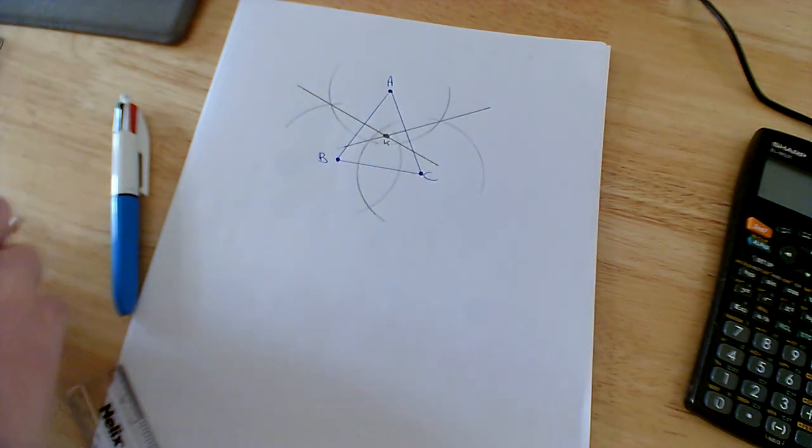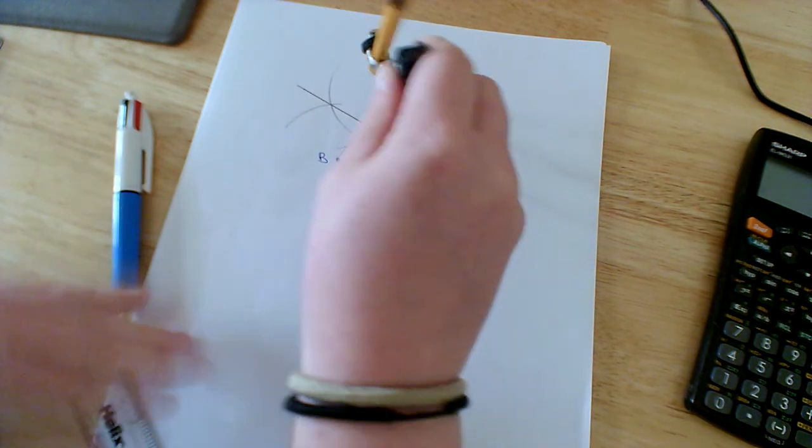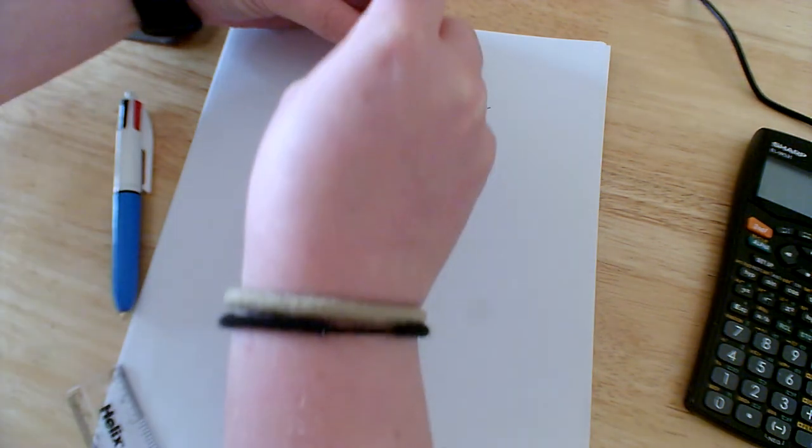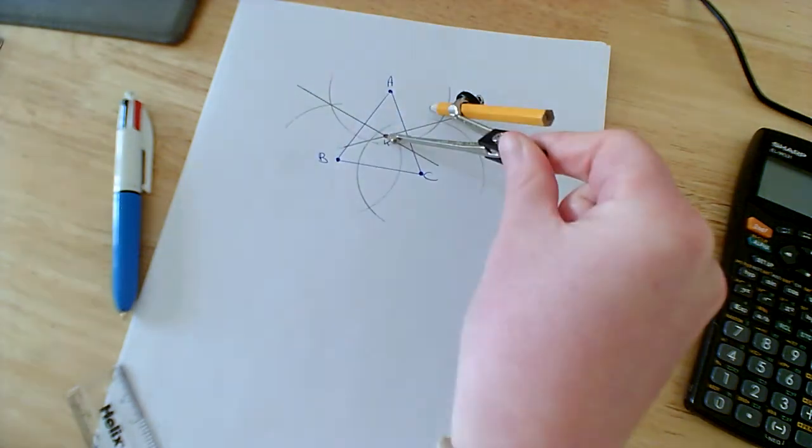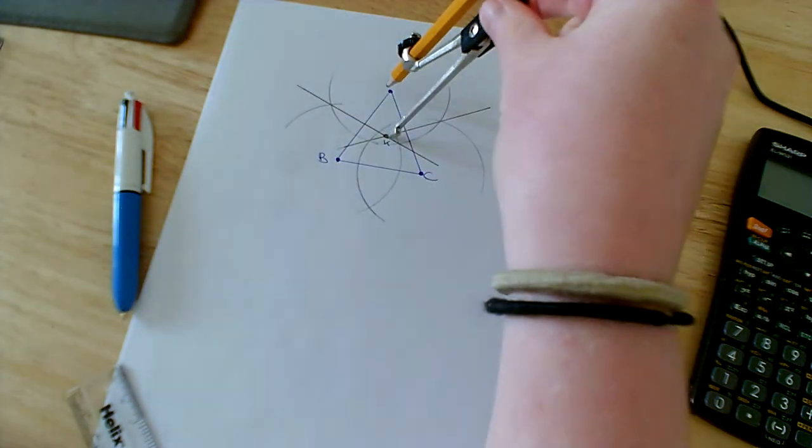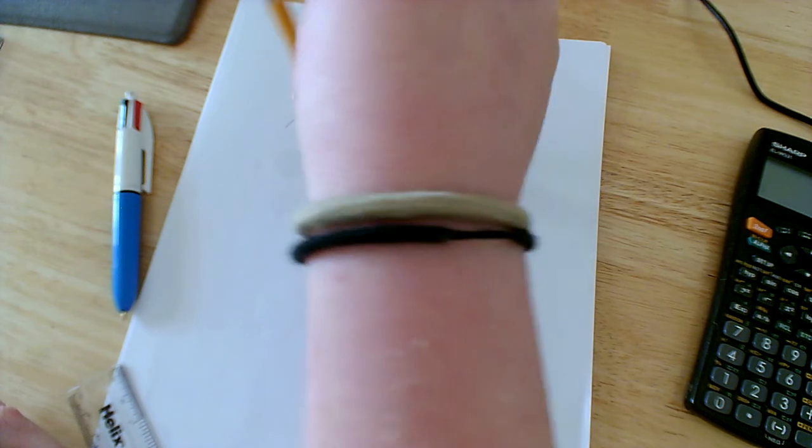With my circumcentre, this is now my centre. I place my compass at the centre and put it up to point A or B - it doesn't matter which point you choose. So this is now my radius. What I need to do is draw my circle the whole way around.